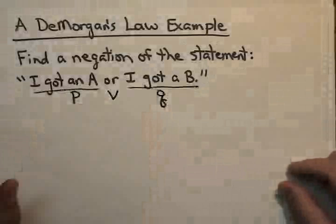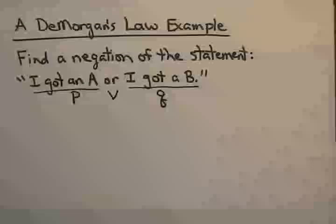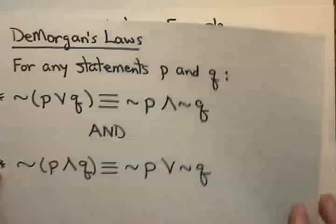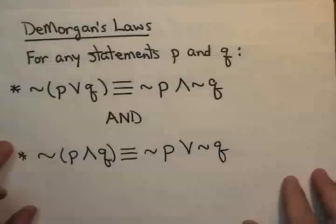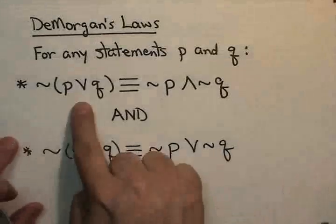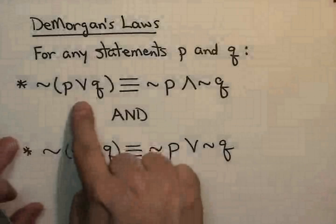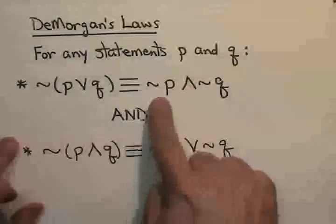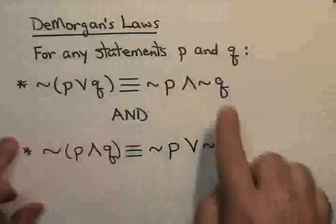Now, DeMorgan's Laws tell you how to handle a situation like that. In particular, if you look back at something we did earlier, if we want to find the negation of a disjunction, we use this equivalency, which says the negation of a disjunction is not P and not Q.